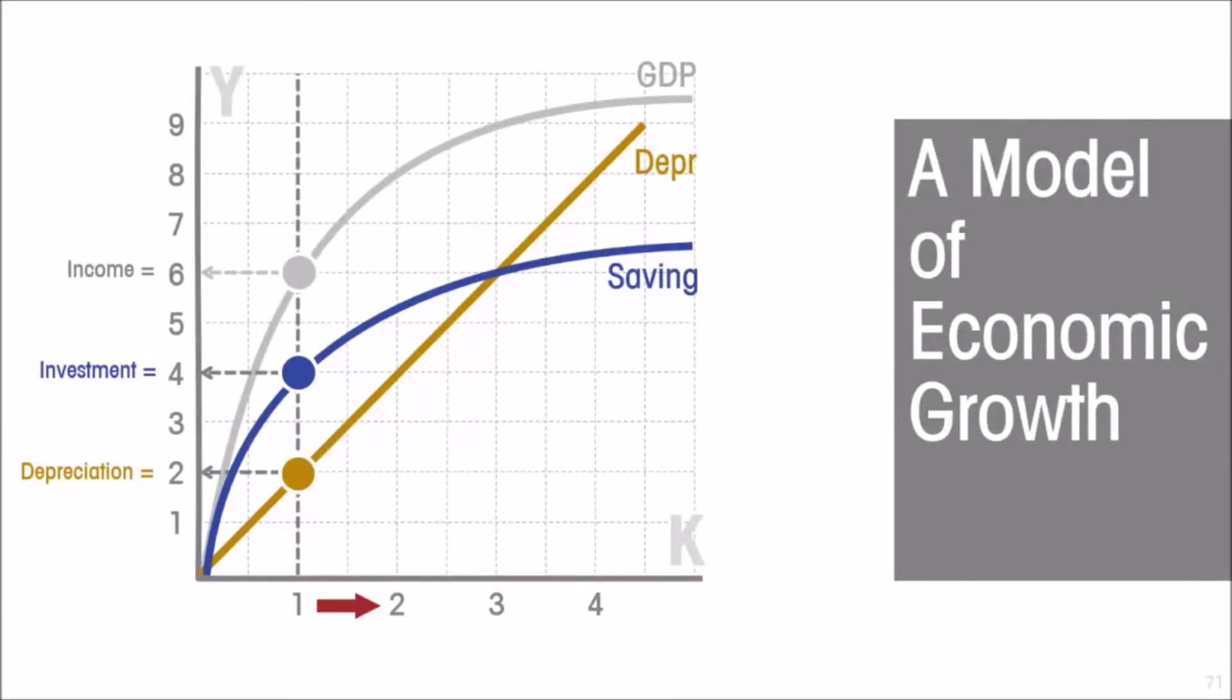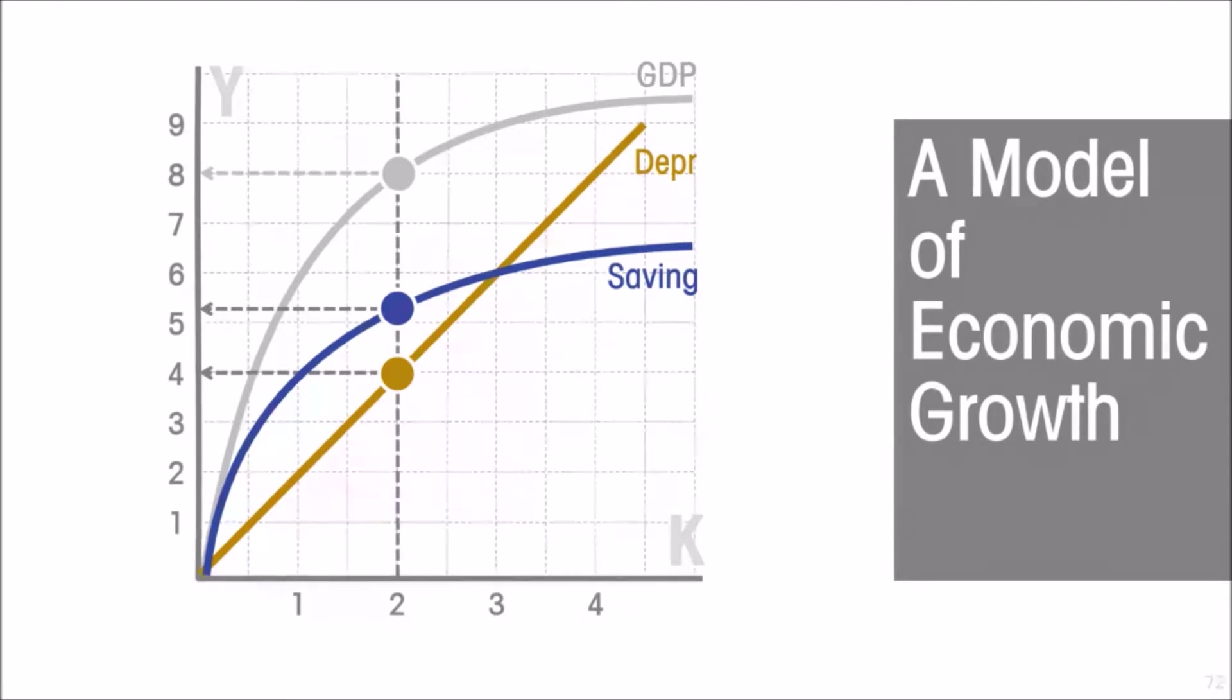Let us say it grows from one to two. Then we repeat the exercise. If capital grows from one to two, then output grows from six to eight. So the capital stock is higher. Depreciation is higher. But gross investment is still greater than depreciation. So the capital stock will continue to grow.